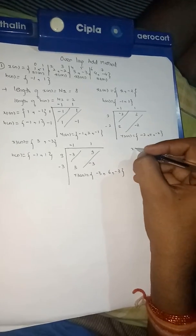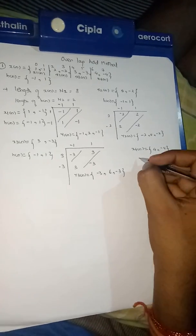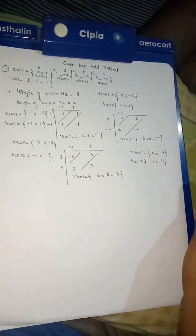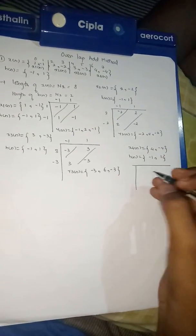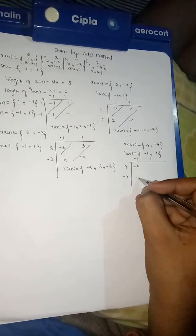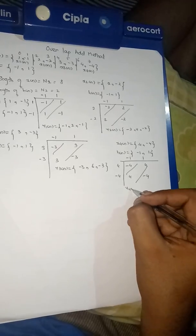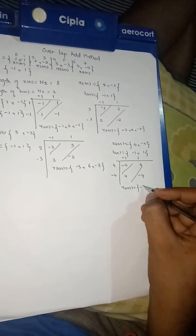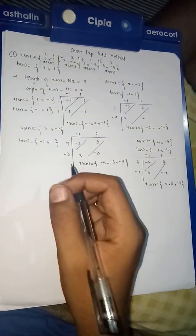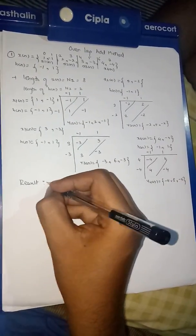For x4[n] = {4, -4} and h[n] = {-1, 1}, using the matrix method we find y4[n] = {-4, 8, -4}.